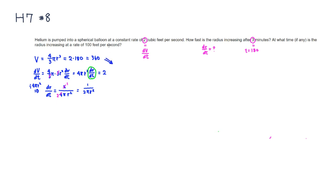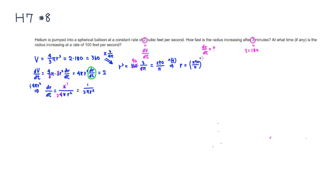From here we can solve for R. Multiplying by the reciprocal 3 over 4π isolates R³, giving R³ = 360 × (3/4π). Simplifying: 4 and 360 cancel to give 90, so R³ = 270/π. Taking the cube root, R = (270/π)^(1/3).